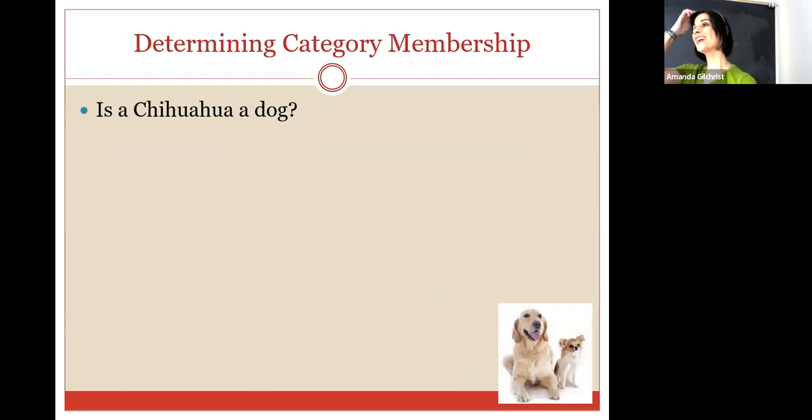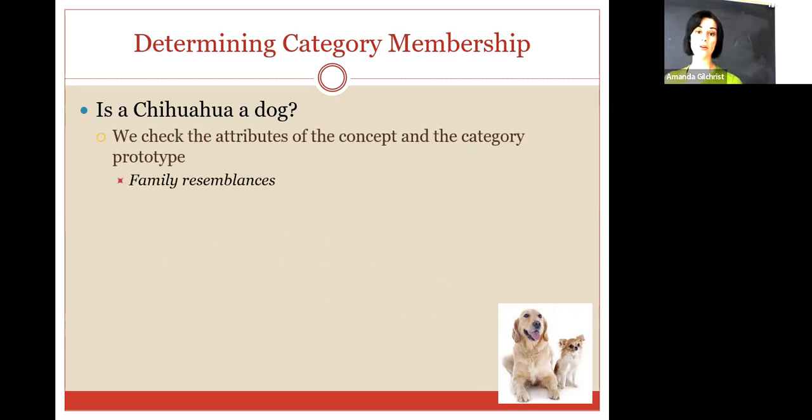So, when we are determining whether or not something is a member of a category based on a prototype approach, if we want to ask ourselves, is a chihuahua a dog? Is a Weimaraner a dog? Is a pit bull a dog? We're going to check the attributes of the concept and the category prototype. So, we're going to compare the features of a certain dog and compare them to the prototype. So, what we are looking for, we're trying to look for that match between the prototype and the actual dog. And when we do that, we are looking for what are called family resemblances. So, here's a lab. They're so cute. I like silver ones myself.